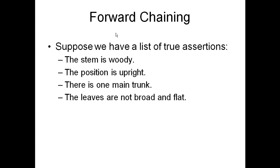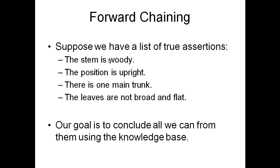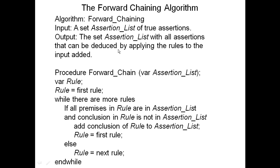Backchaining is a recursive algorithm and it's a little complicated. A much simpler algorithm, which is non-recursive, is called forward chaining — that's the other standard way to process a rule base. It's used for this situation: in the case of a rule base such as the one we're looking at, suppose we have a list of true assertions. Suppose somebody tells our biologist they know all these things are true about the current plant. Our goal is simply to use this knowledge to conclude all we can from them using the knowledge base.